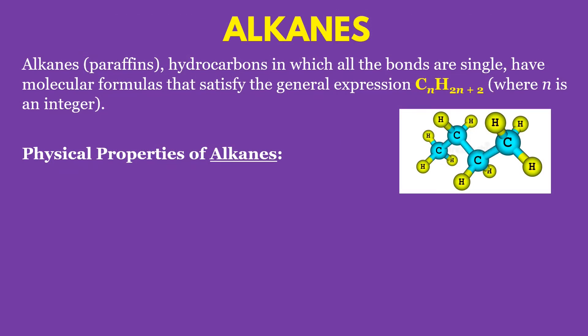The first type of hydrocarbon is the alkane. Alkanes are also known as paraffins. Hydrocarbons in which all the bonds are single have molecular formulas that satisfy the general expression CnH(2n+2), where n is an integer.